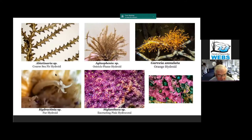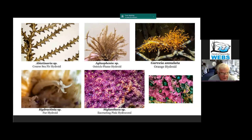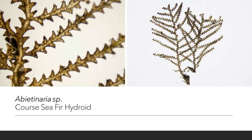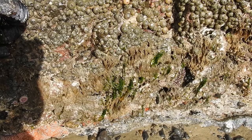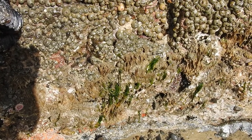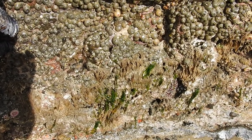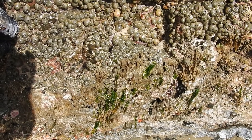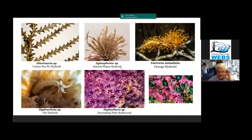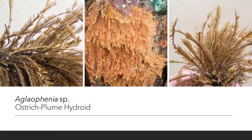Here are some of the hydroids we'll see in the intertidal zone — there are probably a lot of others I haven't identified yet. One of them is the sea fur hydroid, Abietinaria, which looks kind of like a yellowish-brown hair hanging off rocks. Another one is the ostrich plume hydroid, Aglaophenia, which looks like a feather.